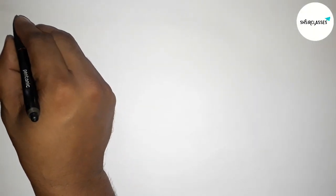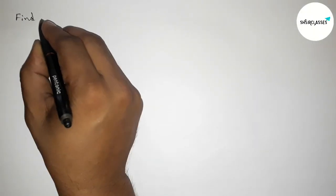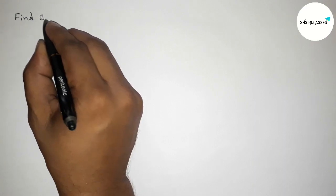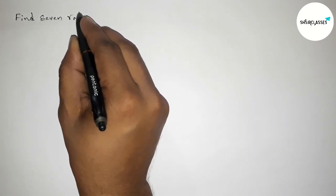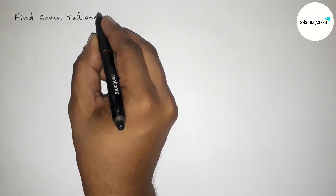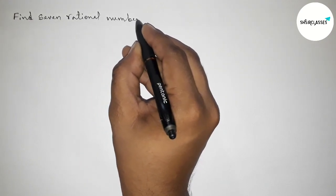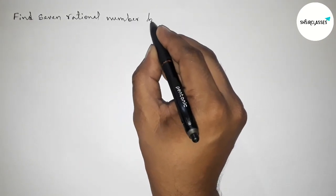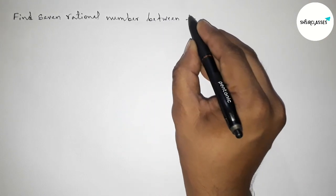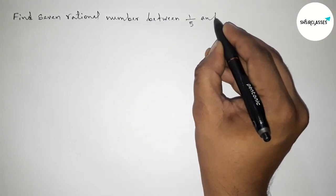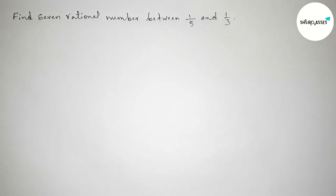Hi everyone, welcome to SI Share Classes. Today in this video we have to find seven rational numbers between one by five and one by three in an easy way. Please watch the video till the end. Let's start.